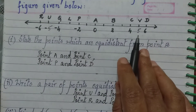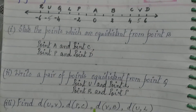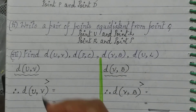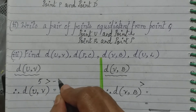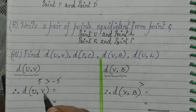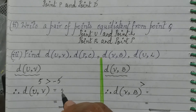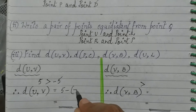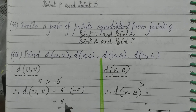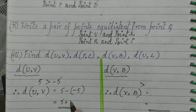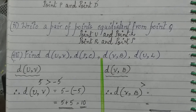Which coordinate is greater? 5 is greater than minus 5. To find the distance between U and V, we calculate 5 minus (minus 5), which is 5 plus 5, which equals 10.